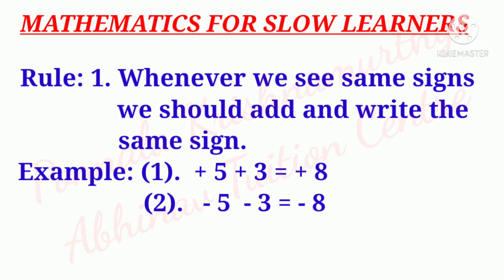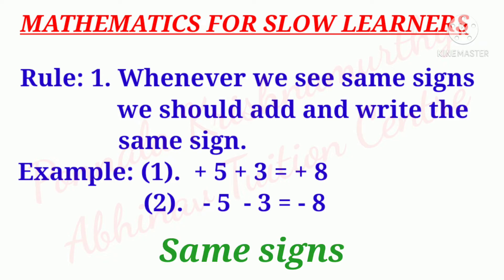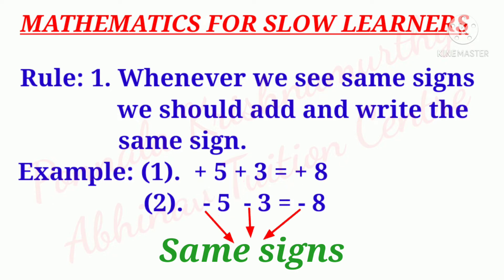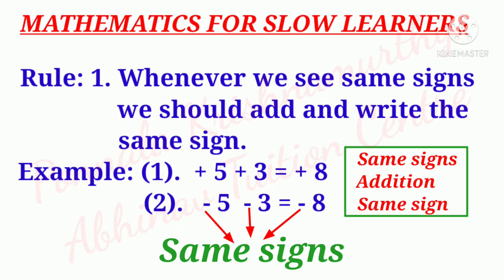Example: 5 plus 3 is equal to 8. Plus 5 plus 3 is equal to plus 8. Minus 5 minus 3 is equal to minus 8. Same signs — addition — write the same sign.